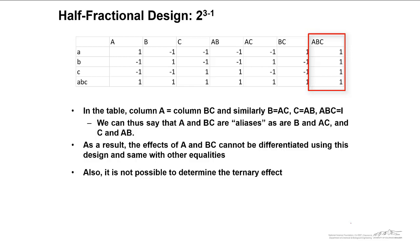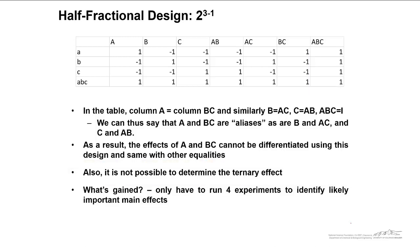In order to determine effects, you have to be able to calculate the contrast. In the contrast, you need both positive and negative values. So if we have all ones in a column, that means we cannot calculate the contrast nor effect of that particular interaction. So for this design, we cannot determine the ternary effect ABC. So what's gained in a half fractional design? You only have to run four experiments to identify likely important main effects.